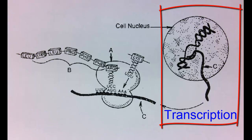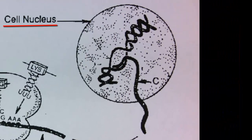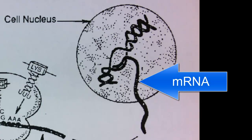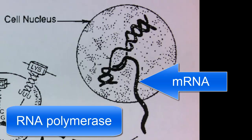Transcription takes place first in the nucleus. Information in a gene is copied by synthesizing a messenger RNA molecule. This is accomplished by the enzyme RNA polymerase.